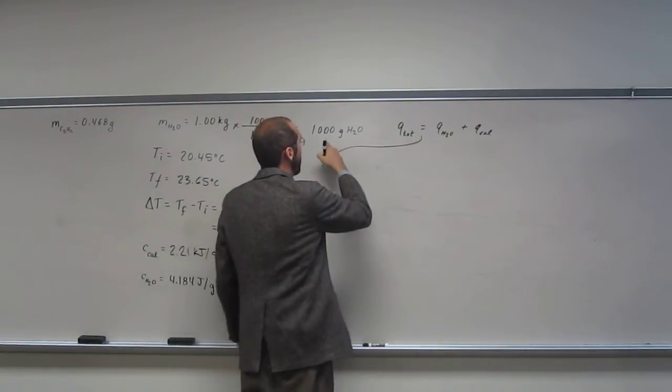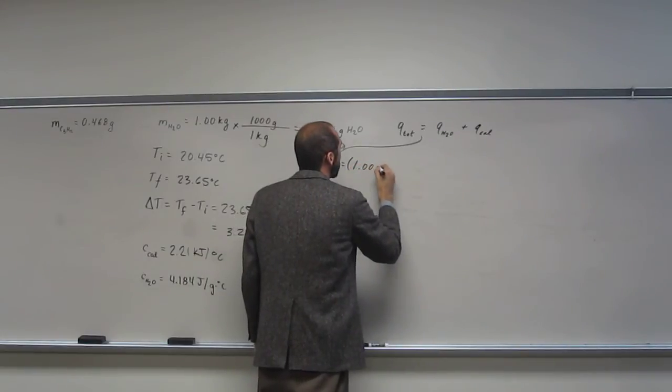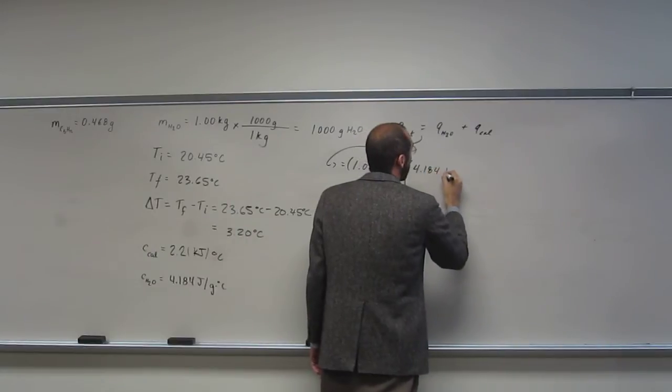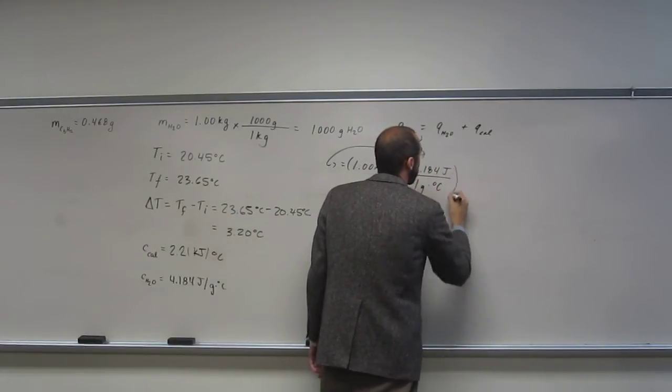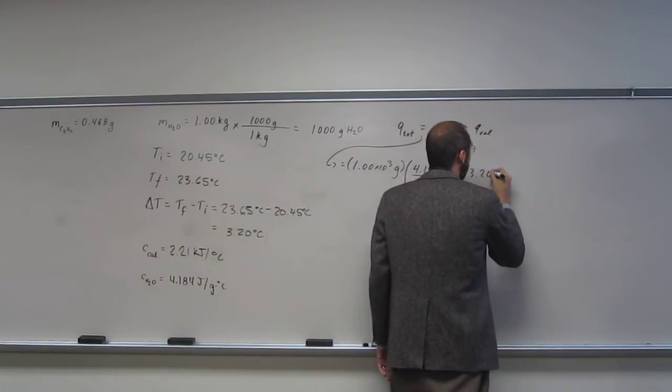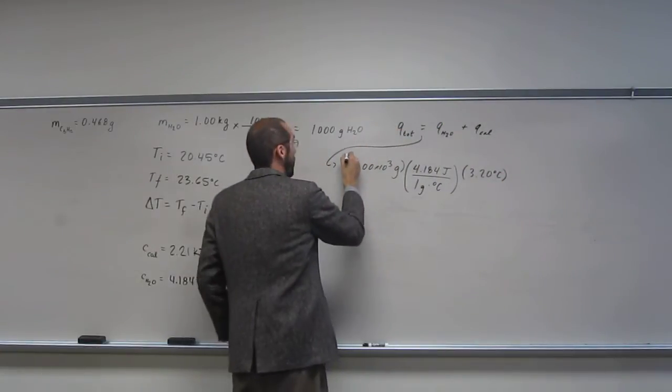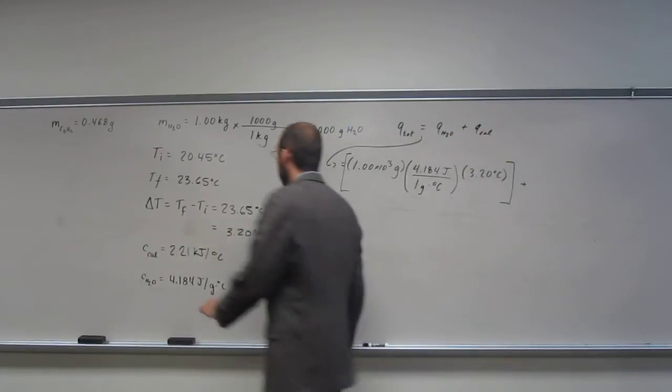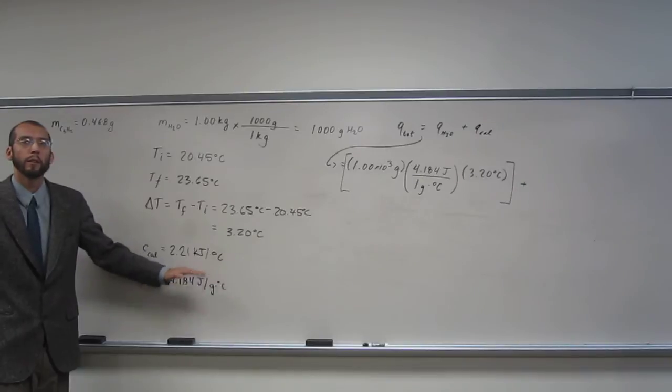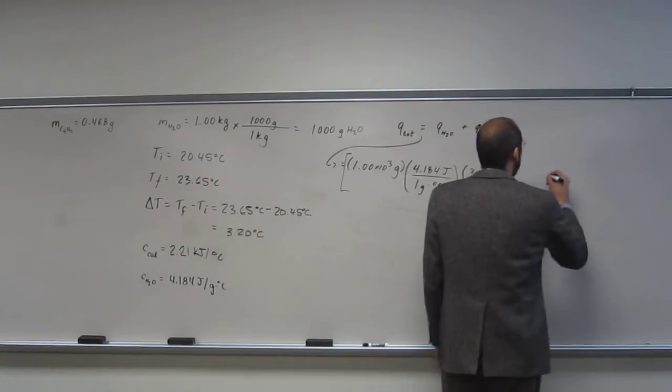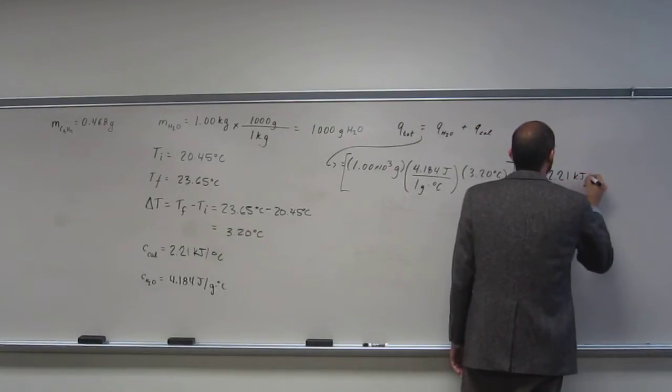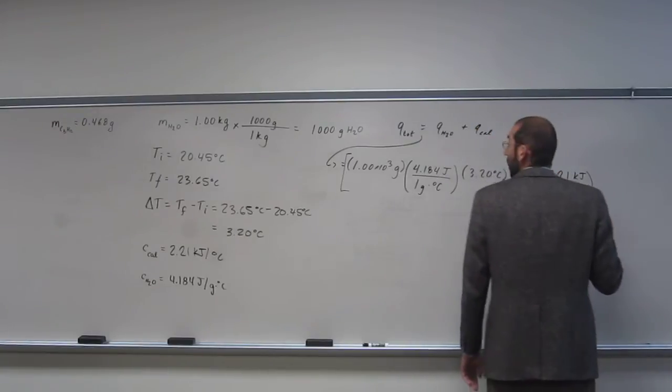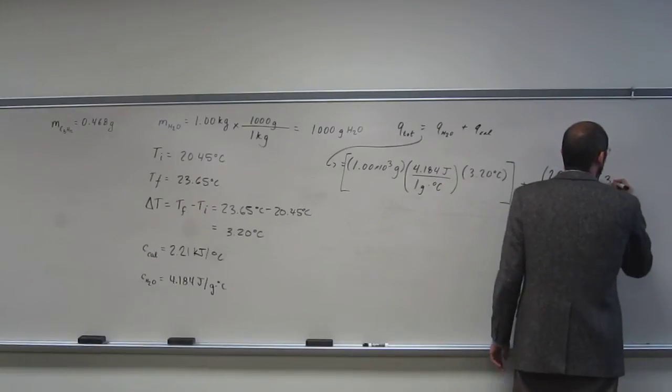So remember, MC delta T. So M in this case, remember that's 1 times 10 to the 3 grams. So M, C, 4.184 joules per gram per C, and delta T, 3.20 degrees. I like to put brackets. So in this case, notice there's no mass unit for your calorimeter. It's just that's the heat capacity. So 2.21 kilojoules per degree C times the same delta T, 3.20.